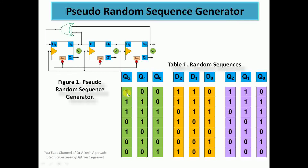Moreover, the number of sequences is 7: that is 2^3 − 1, where 3 is the number of flip-flops. So 2^3 = 8, minus 1 gives 7 different sequences, all randomly generated by this pseudo-random sequence generator. Thank you.